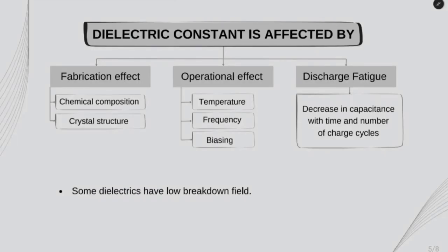Now let's talk about factors affecting dielectric constant. One is fabrication effect — the dielectric constant of crystalline material is greater than that of amorphous material. The second is operational effects like temperature, frequency, biasing, etc. For example, if we increase frequency to a very high value, the dipoles will change their direction quite frequently, which will reduce the dipole moment, in turn reducing the dielectric constant.